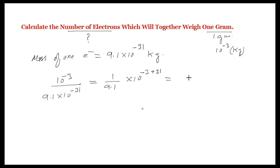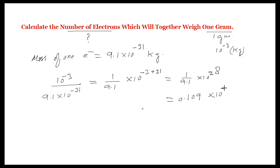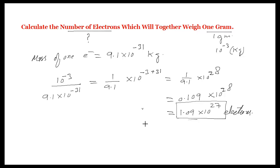Simplifying this, 1 by 9.1 into 10 to the power 28. This will be equal to approximately 1.1 into 10 to the power 27 electrons. This is the number of electrons which are present in one gram of electrons.